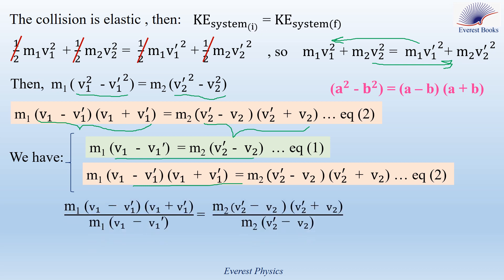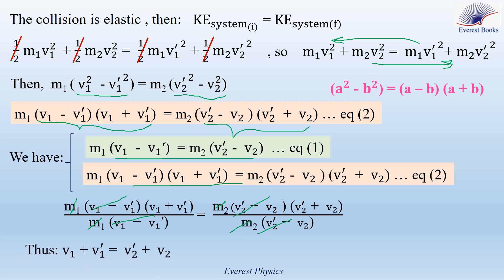Dividing equation 2 by equation 1, M1 cancels out, (V1 − V1') cancels out, M2 cancels out, and (V2' − V2) cancels out. This gives: V1 + V1' = V2' + V2. Rearranging, V2' = V1 + V1' − V2. This is equation 3.